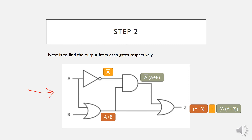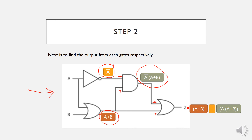Input A goes through an inverter or NOT gate, giving output A-bar, which is the inverse of A. From there we have an OR gate with inputs A and B, giving output A OR B. Both A-bar and A OR B become inputs to the AND gate. Finally, the result from the AND gate and A OR B go into the last OR gate, giving us the final output Z, which equals A OR B OR (A OR B AND A-bar).